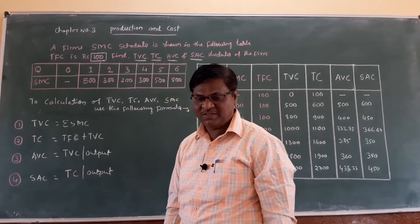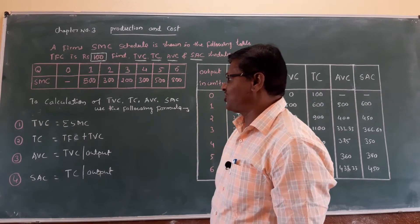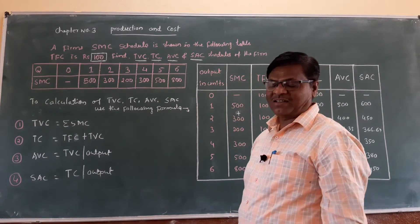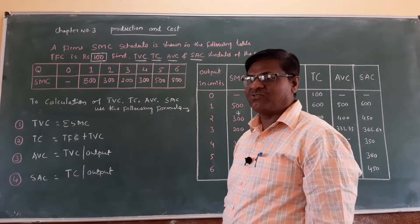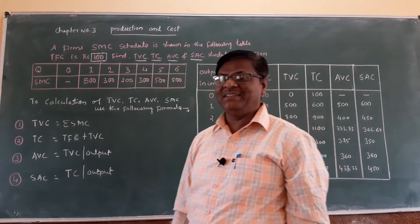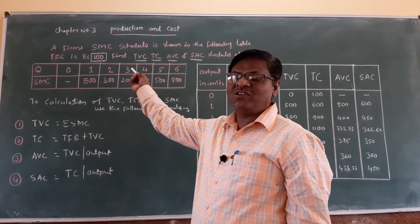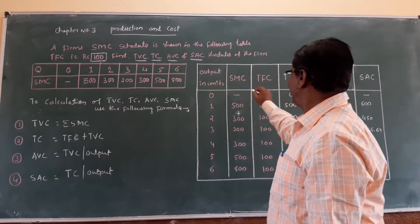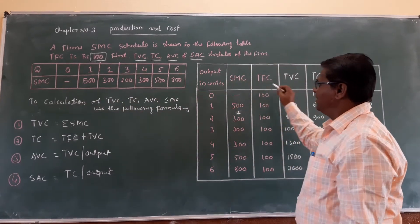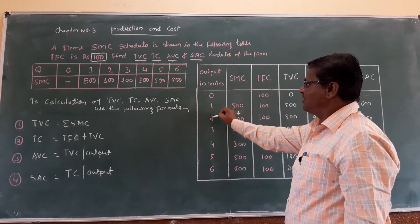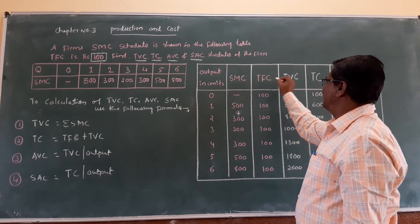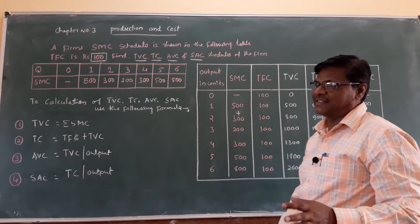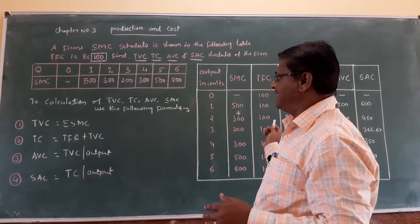First, you prepare a table with the following columns: output in units, SMC, TFC, TVC, TC, AVC, and SAC.